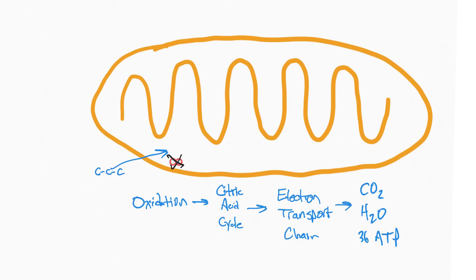Instead, we have another pathway through fermentation. At the end of that, we have lactic acid and two ATP.